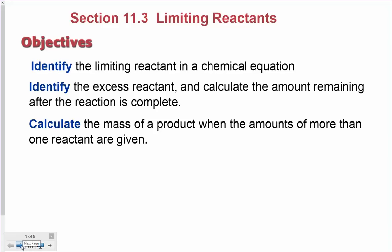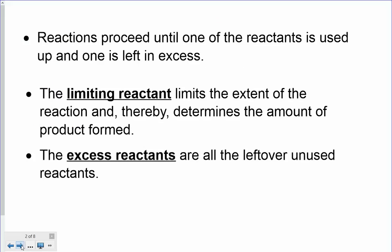A chemical reaction will proceed until one of the reactants is used up. We don't usually have exactly the right amounts of two reactants so that they both get used up equally — there's always a little bit of one left over. The one that gets used up completely is the limiting reactant. That's what stops the reaction. As soon as that's used up, the reaction stops and that's as much product as we can form. Whatever is not used — those are called the excess reactants.